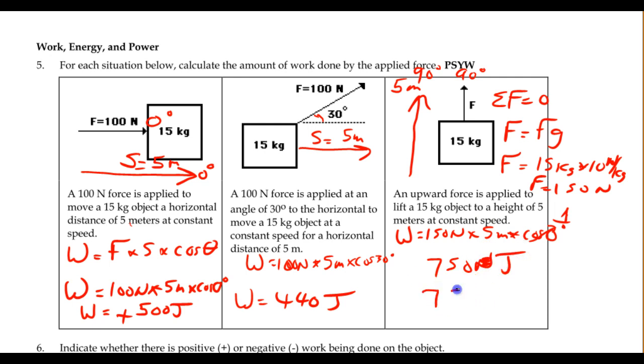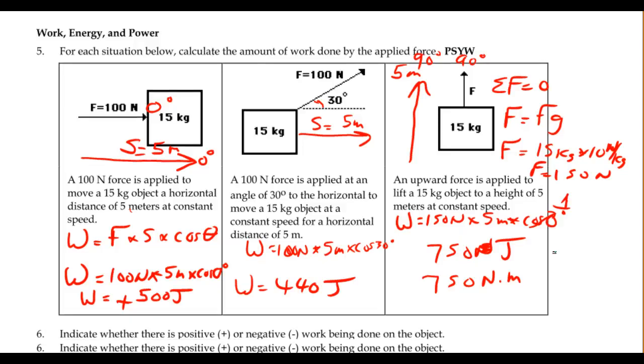Not newtons, newton meters, which are also known as joules. So again, I could write 750 joules, or I could write it as 750 newton meters. Both are acceptable. So that's some relatively straightforward applications of the work formula.